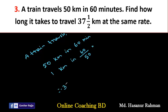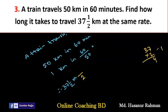Therefore for 37 and a half km: converting 37 and 1/2 into an improper fraction gives 37 multiplied by 2 plus 1 = 75, so 75 by 2 km. Time for 75 by 2 km is 60 multiplied by 75 divided by 50 multiplied by 2.